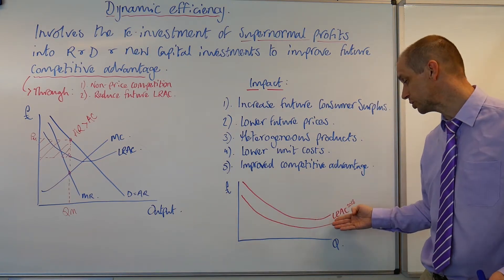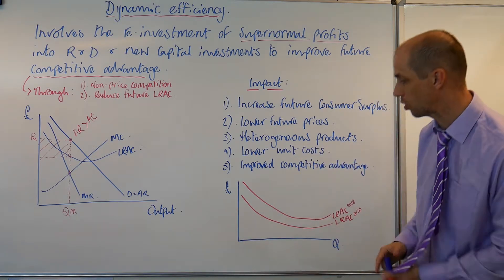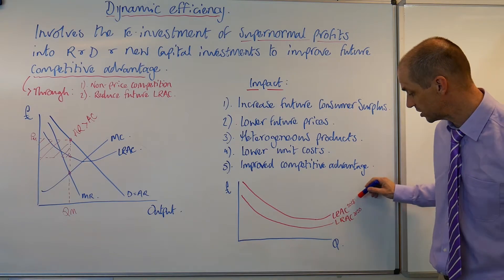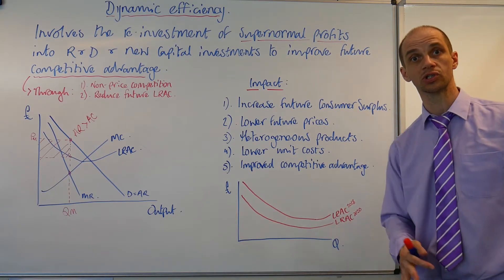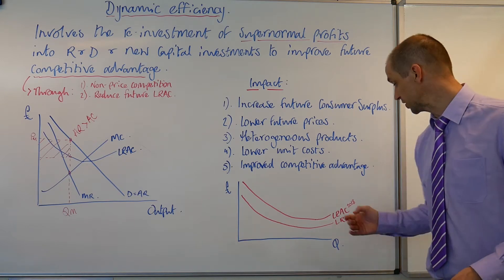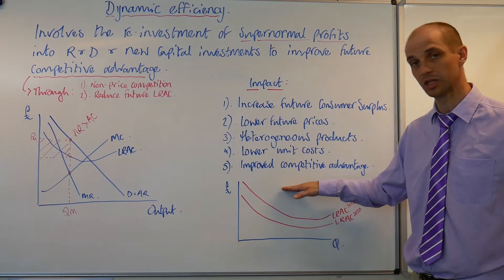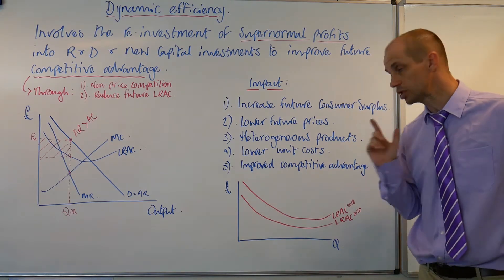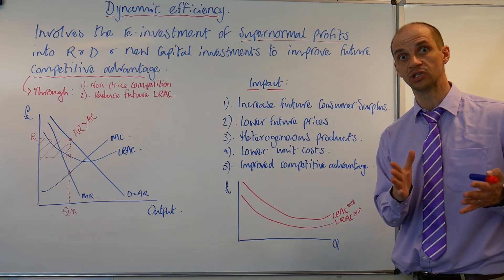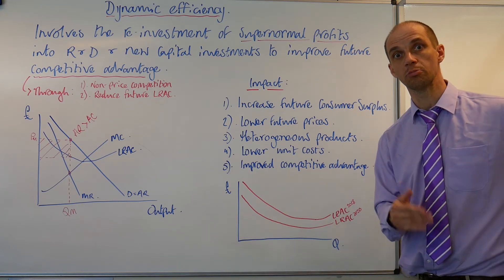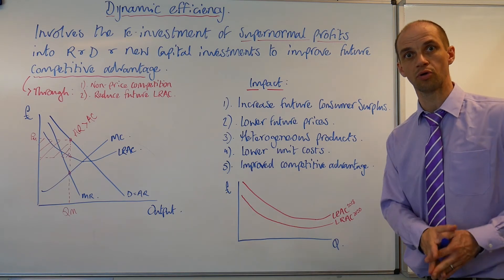This could reduce product wastage of perishable goods, and therefore the long-run average cost curve of 2018 may be higher than the long-run average cost curve attainable in 2020. A firm that's dynamically efficient may end up doing this, but it does depend on that company's market position — are they competing on price, or on product differentiation and non-price competition?